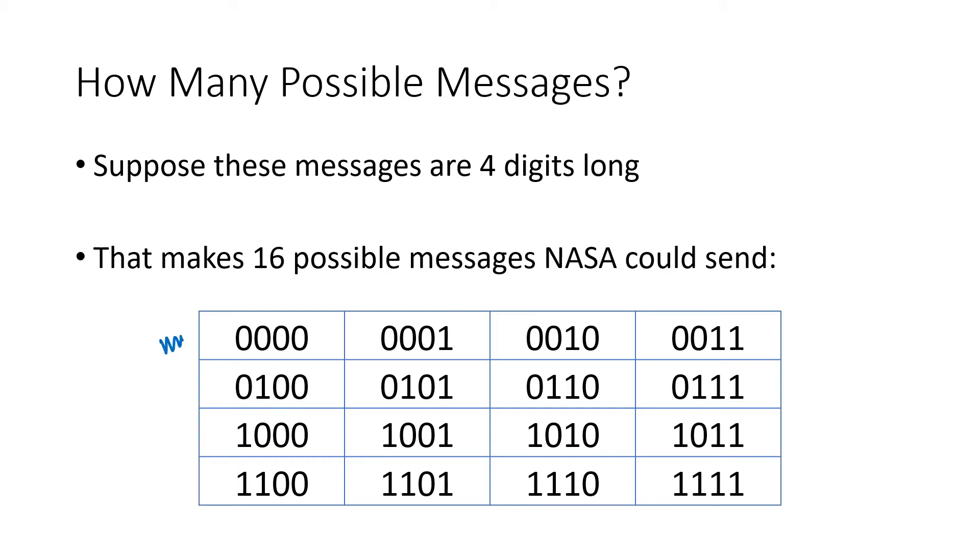We can imagine that each of these sequences of zeros and ones represents a different command. So 0, 0, 0, 0 might be, you know, move the robotic arm up. 0, 1, 0, 0 could be take a picture with the camera. So there could be a lot of different things that we want this lander to do. And each of these might represent a different command that we want to send. And if we have four digits to play with, and each of those digits can be 0 or 1, that's going to give us 16 possible messages, which are all listed here.